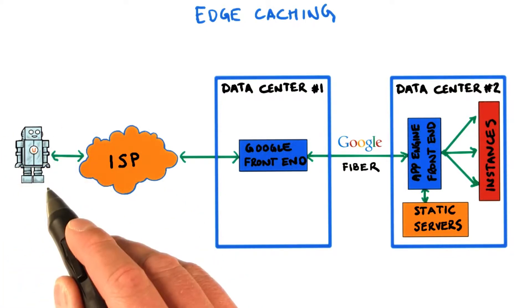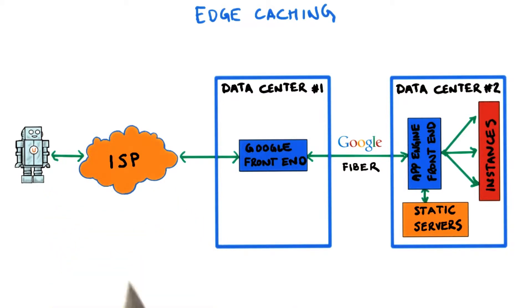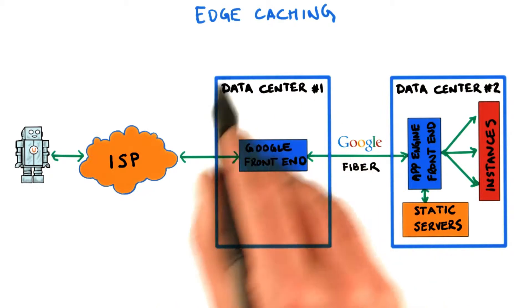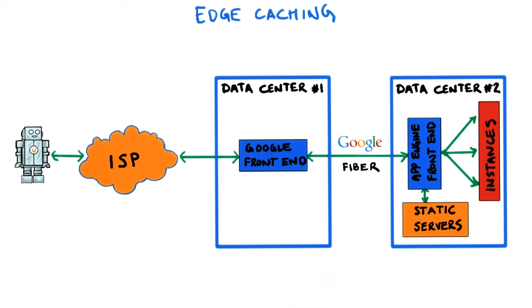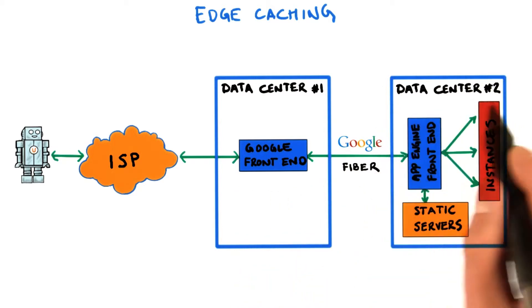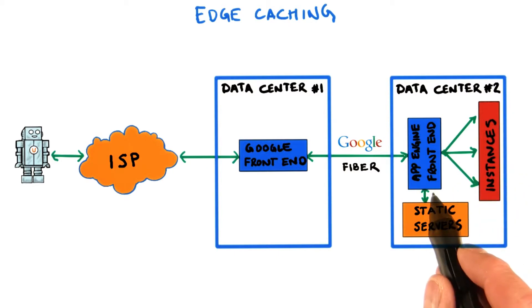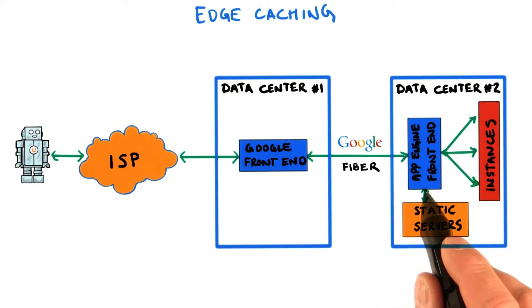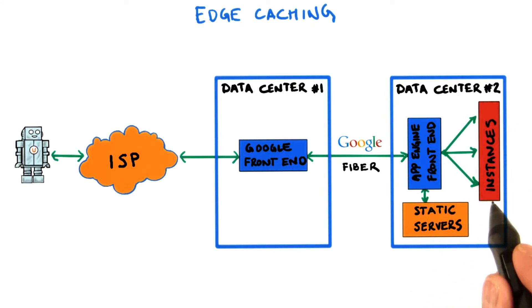First of all, users that want to use your application are connected to their Internet service provider. This provider connects to a Google data center after the DNS lookup has determined that your application is hosted by Google. Google then identifies the data center where your App Engine application runs and starts talking to the App Engine front end. If the content is dynamic, the App Engine front end determines the instance that should manage the request. So these are your App Engine instances that run your application code.